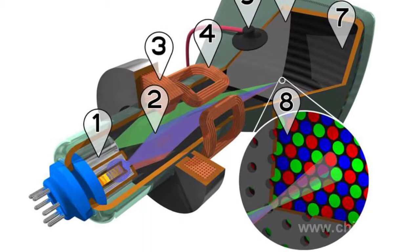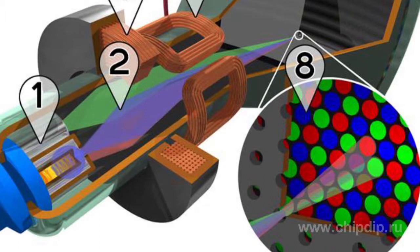A color CRT is different from a black and white one by having three guns: red, green, and blue. So the screen 7 has in a certain order three types of luminophores: red, green, and blue.